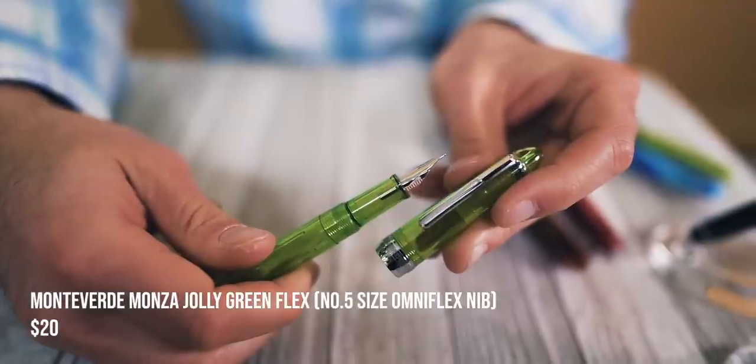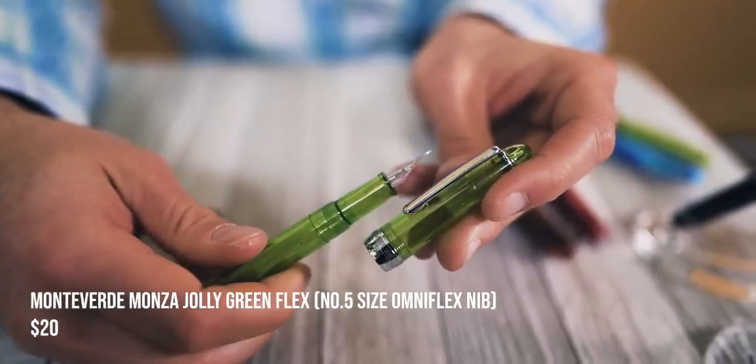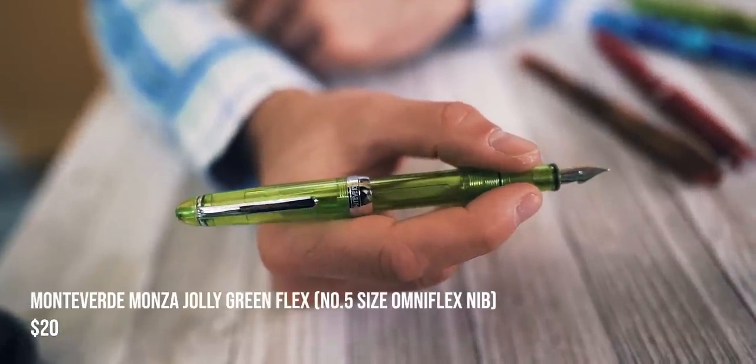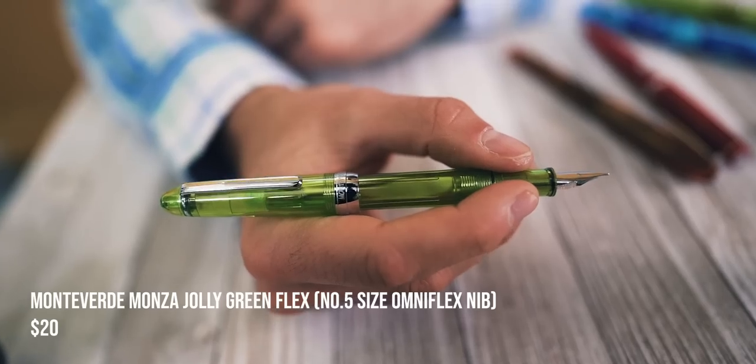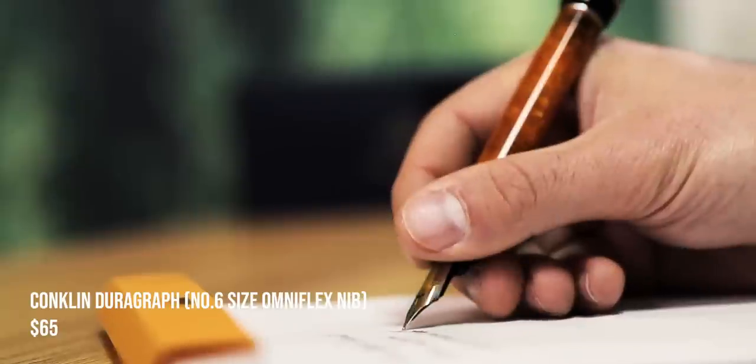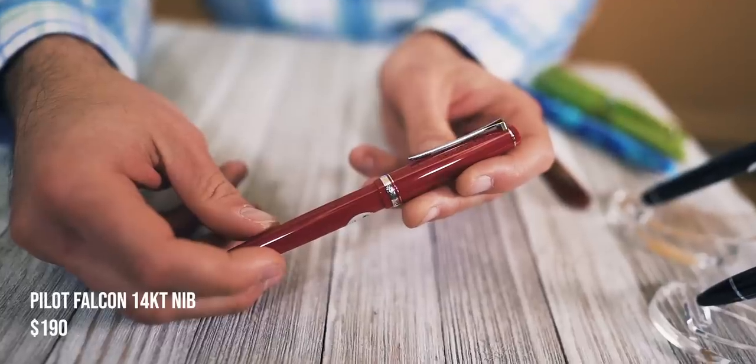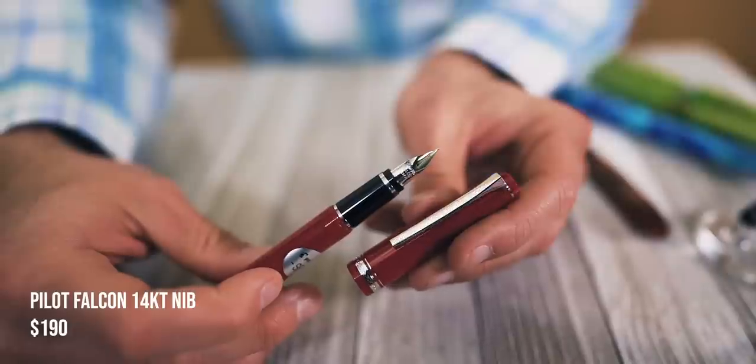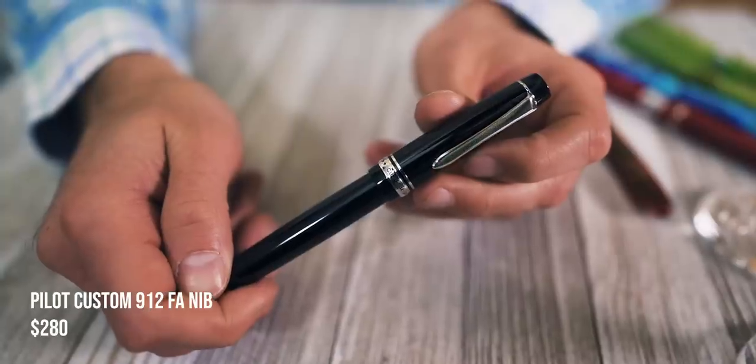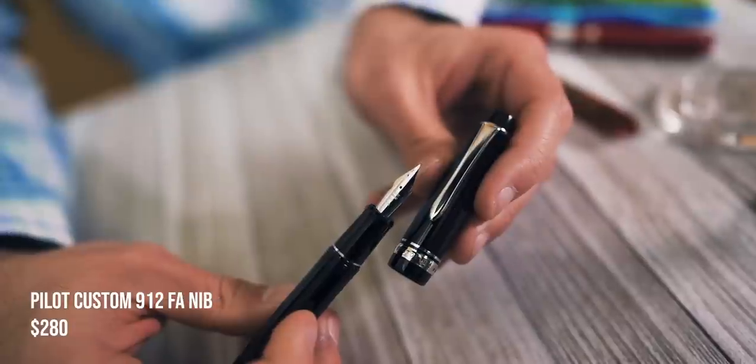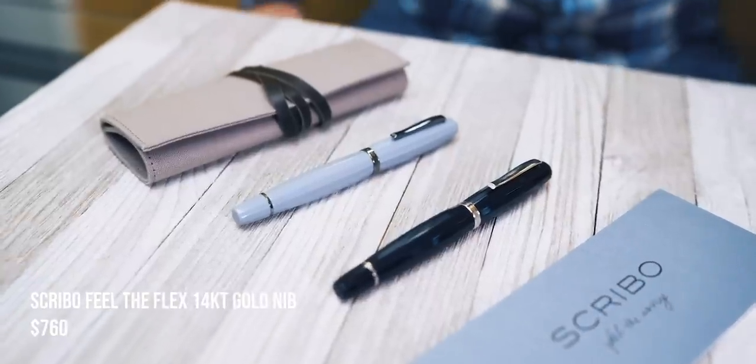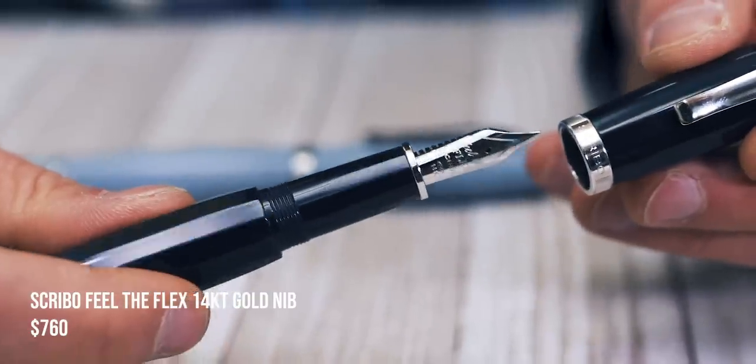And here's our suggestions for flex nibs. Number one, Monteverde Monza Jolly Green Flex, the number five size Omni Flex nib. Number two, a Conklin Duragraph with the number six size Omni Flex nib. Number three, a Pilot Falcon with a 14 karat gold Falcon nib. Number four, a Pilot Custom 912 FA nib. Number five, Scribo Feel the Flex 14 karat gold nib.